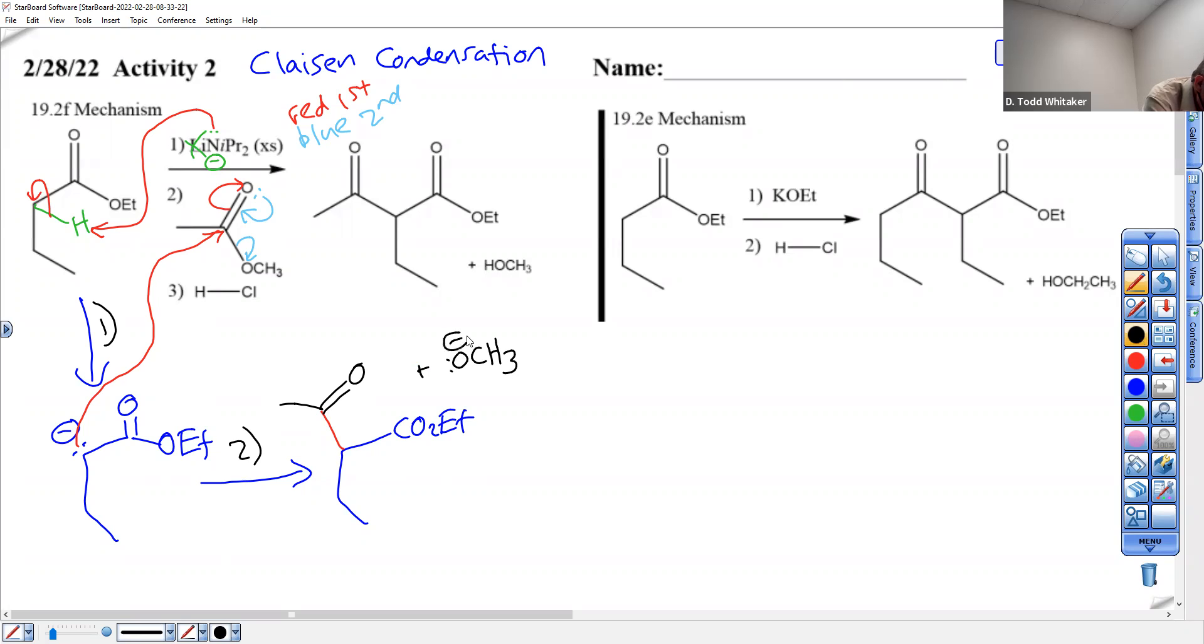Step one, you hit the carbonyl, the pie breaks, that's step one. Step two, the electrons resonate back down and kick off your leaving group.